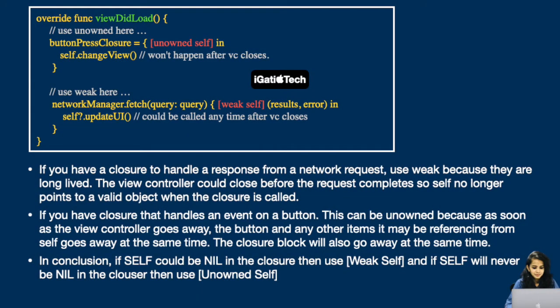Here is an example. The first one is a button press closure — this won't happen after the view controller closes, so here we can use unowned self. Whereas we can use weak for a network call, because it could be called anytime after the view controller closes. There are fair chances that we get a nil value, so here we should use weak instead of unowned.